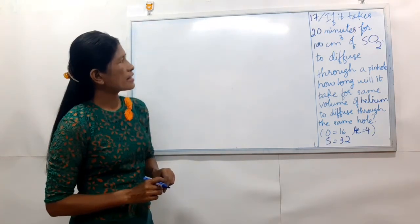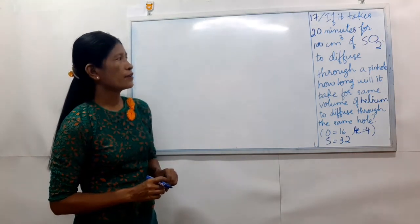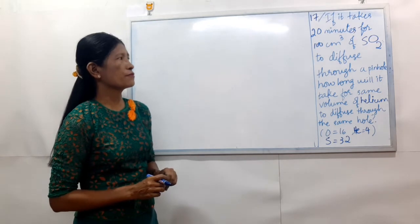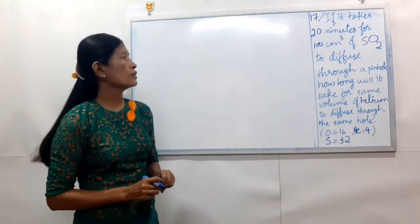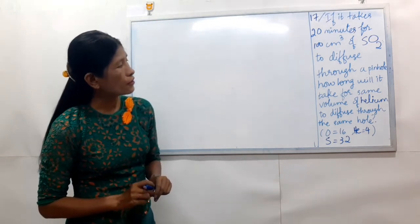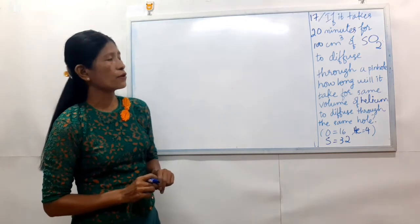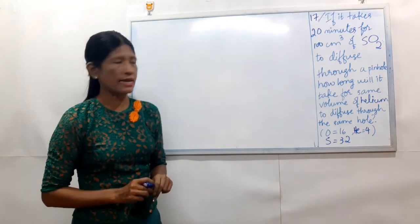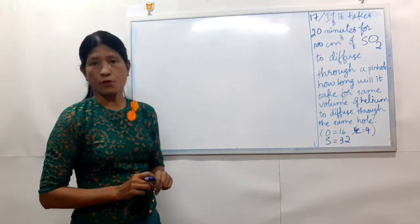If it takes 20 minutes for 100 cm² of sulfur dioxide to diffuse through a hole, how long will it take for the same volume of helium to diffuse through the same hole?